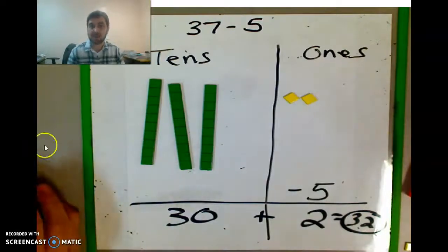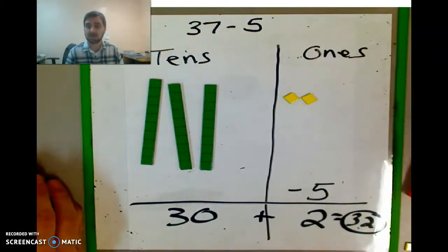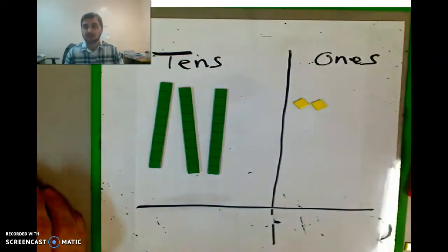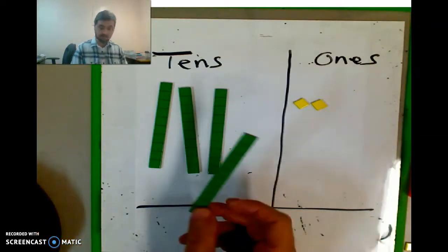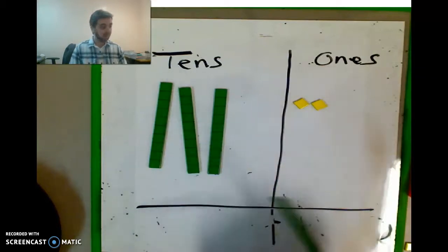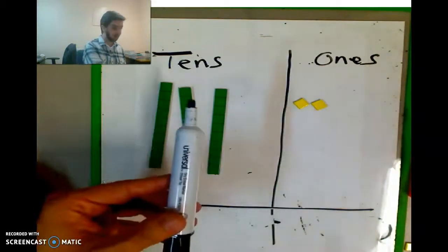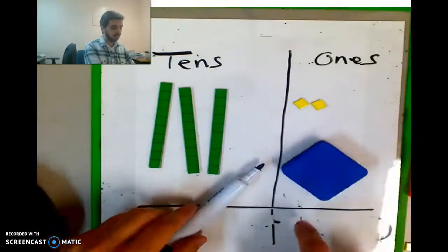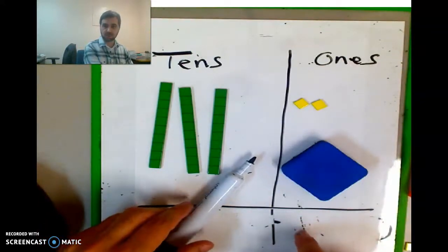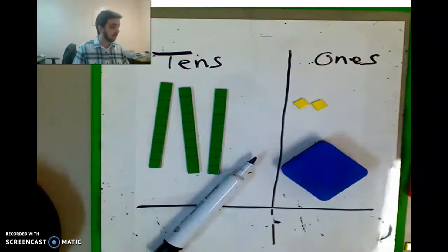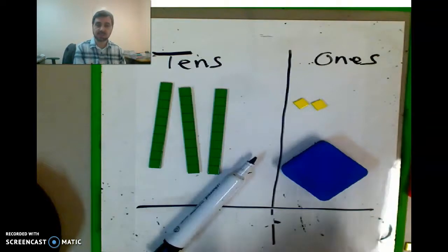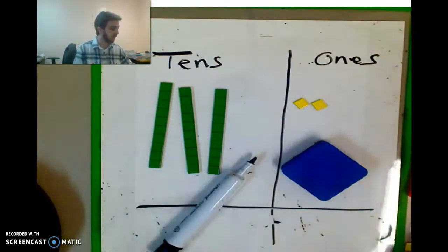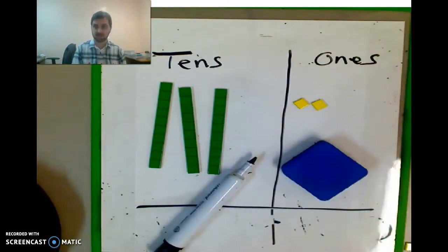This is a pretty easy way of subtracting — all you have to do is take away some of the ones and you're all set. For the rest of the video, boys and girls, I need you to get out your base 10 pieces, your marker, eraser, and dry erase board. Stop the video to get what you need, and when you have those materials, hit play and you'll be ready to get started.